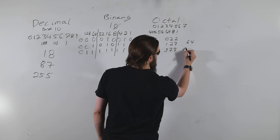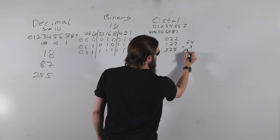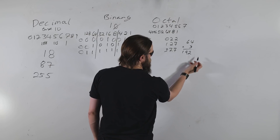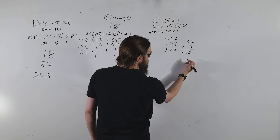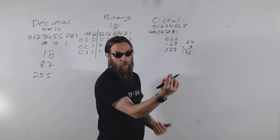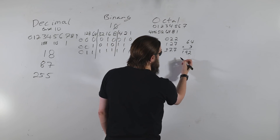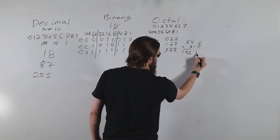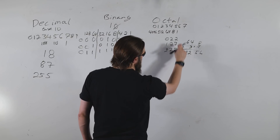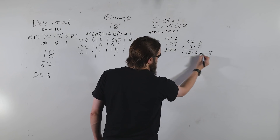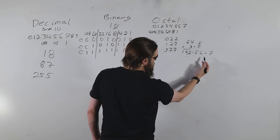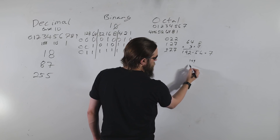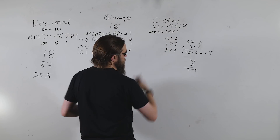Continuing with 255: 64 times 3 is 192, then 8 times 7 is 56, then 1 times 7 is 7. Add them across: 192 plus 56 plus 7 equals 255. That confirms our octal representation.